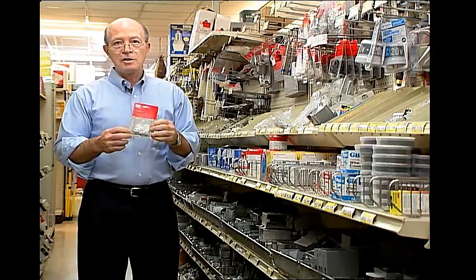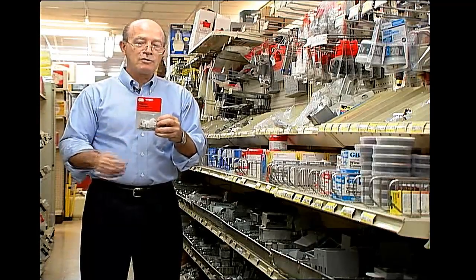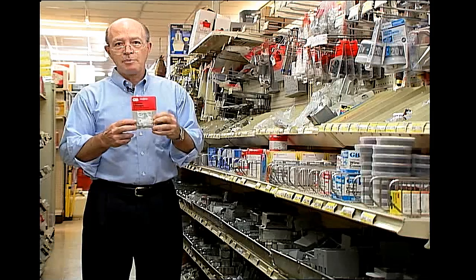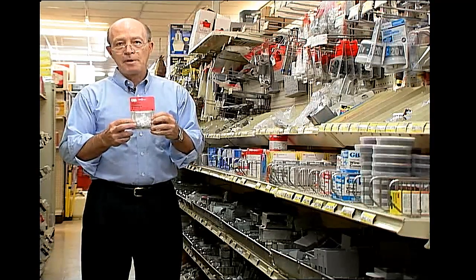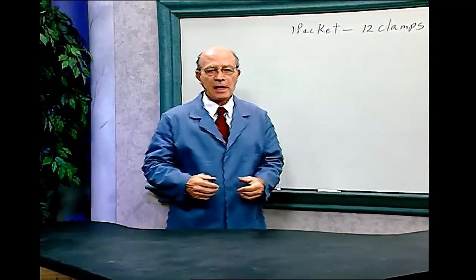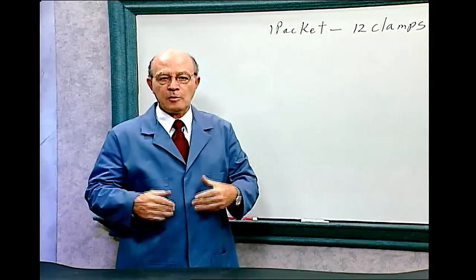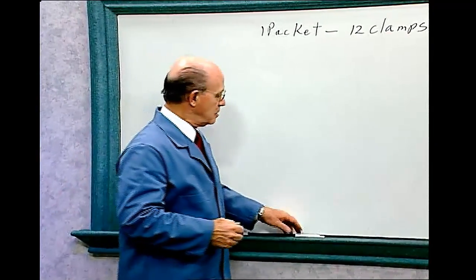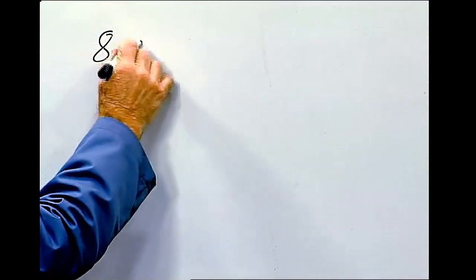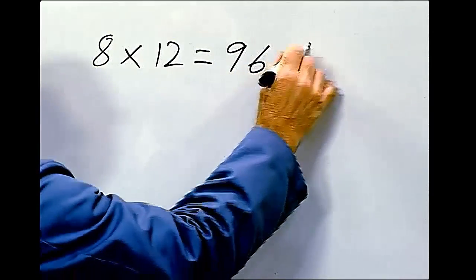This package contains 12 clamps, used for holding electrical wire, cable, and tubing. If I purchase eight of these packages, how many plastic clamps have I bought? One packet has 12 clamps and you bought eight of these packets. So 8 times 12 equals 96 clamps.